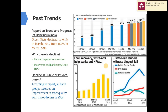Looking at past trends, the RBI releases a report named 'Trend and Progress of Banking in India.' This report mentions that seven years of rising NPA shows a decline. More specifically, gross NPA declined from 11.2% in March 2018 to 9.1% in March 2019.